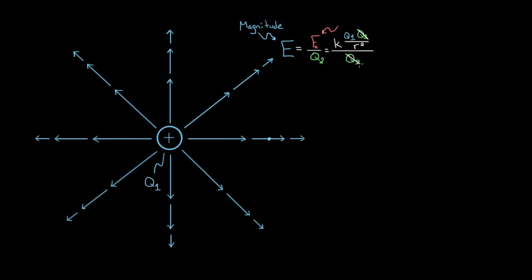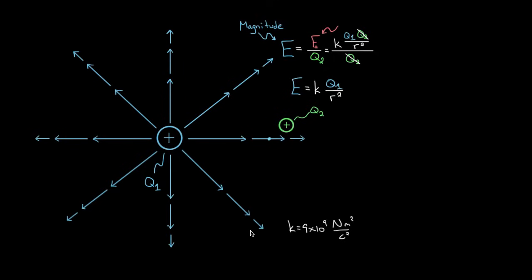Notice what happens: Q2 cancels, and we get that the magnitude of the electric field equals K — nine times ten to the ninth — times Q1, divided by R squared. You might wonder, distance between which two charges? Well, this R is just the distance from the first charge, Q1, to wherever you want to figure out what the electric field would be. Since Q2 always divides out, we don't even need to talk about it. We can figure out the electric field created by Q1 at any point in space.